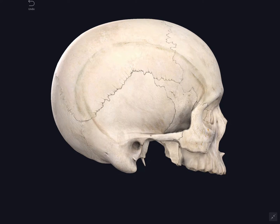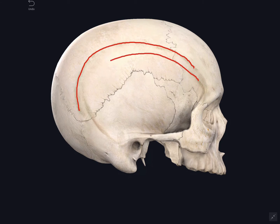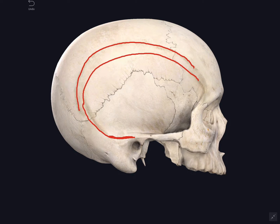The features you can see in normal lateralis include the superior temporal line and below it the inferior temporal line. The inferior temporal line posteriorly becomes continuous with the supramastoid crest. So two temporal lines you can see — the superior and the inferior temporal line — and the inferior temporal line becomes continuous with the supramastoid crest.